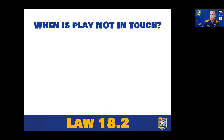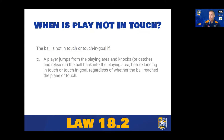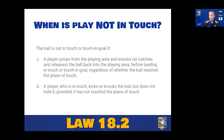Aaron Cruden was screaming at Jaco Peyper — didn't work. It's not in touch or touching goal if a player jumps from the playing area and knocks the ball back into the playing area before landing. Also, a player who is in touch themselves can kick, knock, or bat the ball to prevent it from going out, so long as the ball hasn't reached the plane of touch and they don't hold the ball. That's a crucial concept, because it also has impact on our in-goal law.